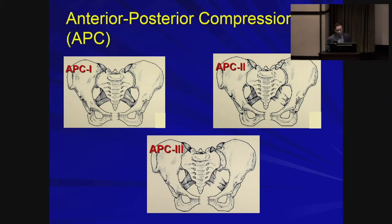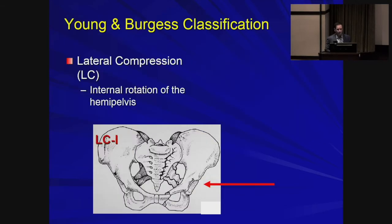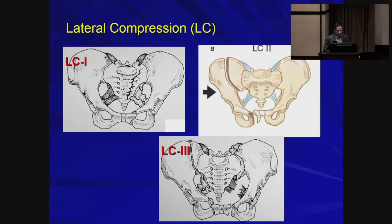The second type is lateral compression — what you get if your car is T-boned, with force from the lateral side causing internal rotation of the hemipelvis. Unlike APC, this closes the volume of the pelvis and kinks those ligaments, so it doesn't carry as high a mortality or bleeding risk. As energy increases, subtypes progress from front fractures with kinking of ligaments to iliac wing fractures — crescent fractures — and eventually external rotation of the opposite side, the windswept pelvis, which increases pelvic volume and mortality.